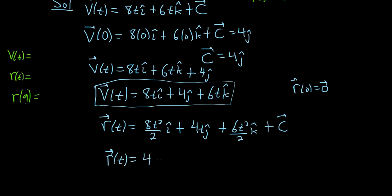So this is going to be 4t squared i hat plus 4t j hat plus 3t squared k hat plus our capital C.